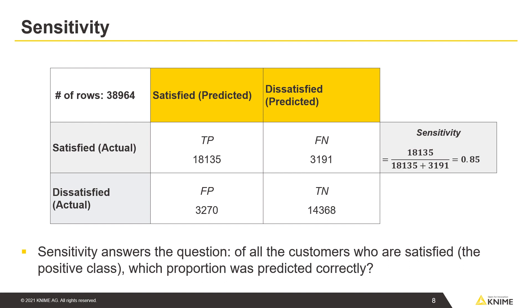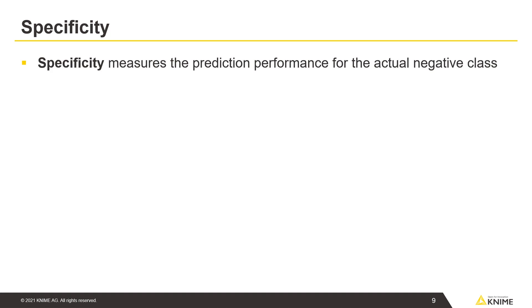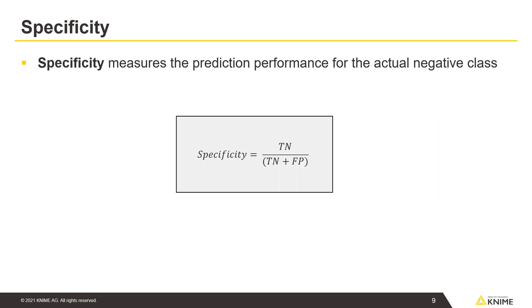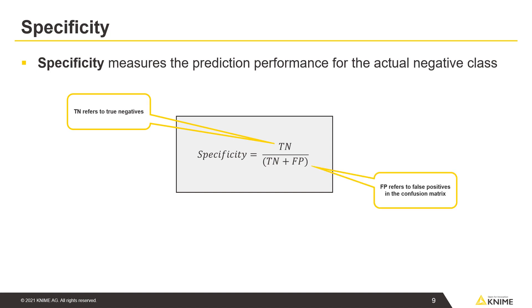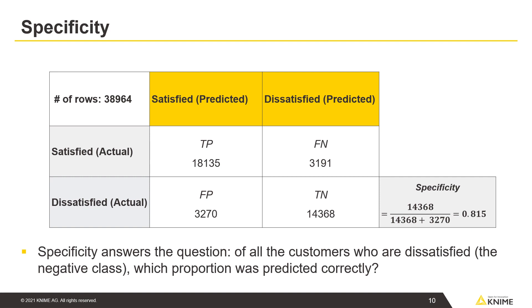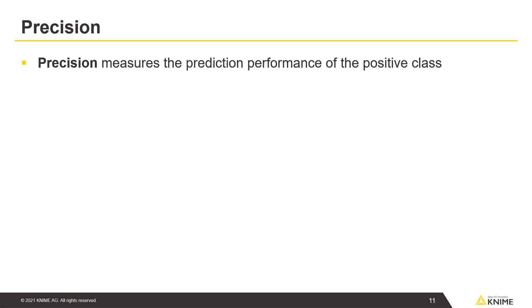Sensitivity answers the question: of all the customers who are satisfied, which proportion was predicted correctly? Specificity measures the prediction performance for the actual negative class. Specificity answers the question: of all the customers who are dissatisfied — the negative class — which proportion was predicted correctly?